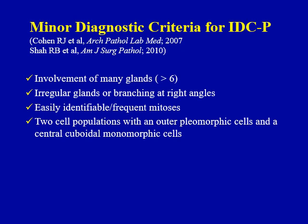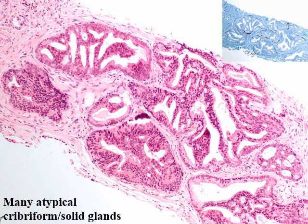In addition to those four major features, there are several minor criteria also helpful in recognition of intraductal carcinoma. I will show you some examples. Intraductal carcinoma is typically associated with multiple involvement of glands, typically more than six glands. Glands frequently demonstrate irregular contour with branching, right-angle branching, like seen in this particular example. That is, in fact, a very helpful feature to distinguish it from invasive cribriform Gleason pattern 4 process.